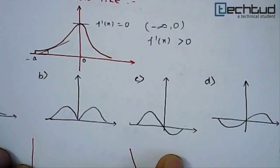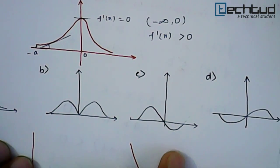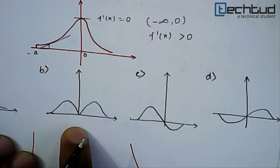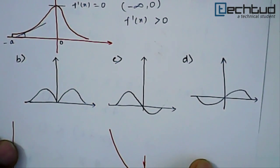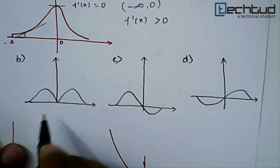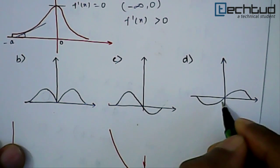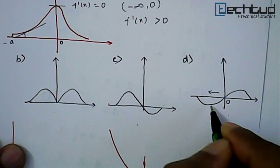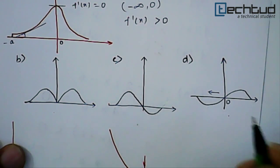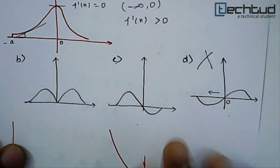So let's check here. Minus infinity to zero it should be positive. So here this is correct. This is correct. But here if you see it is saying for less than zero value this is negative. So this is wrong. It cannot be the answer.